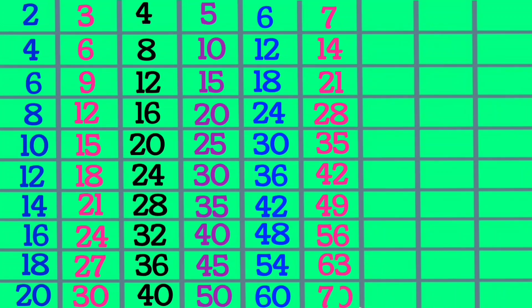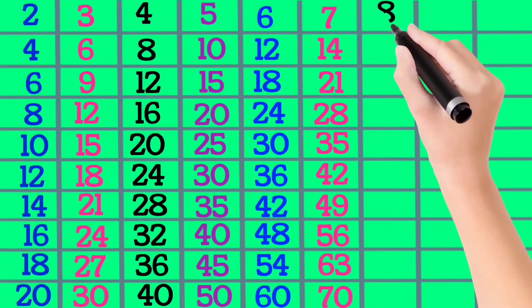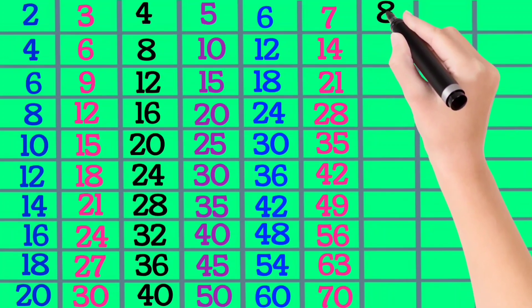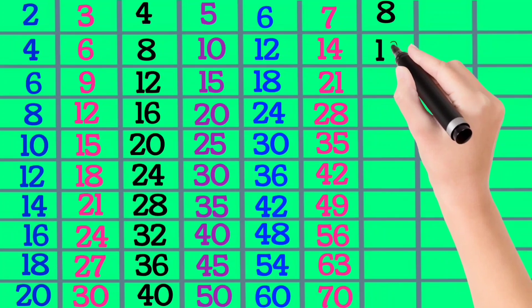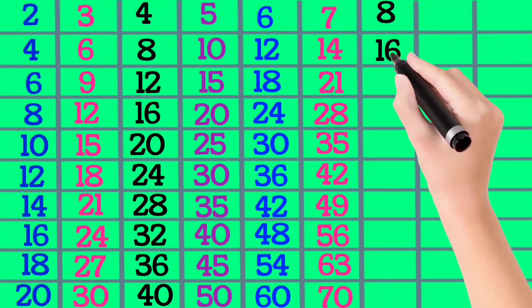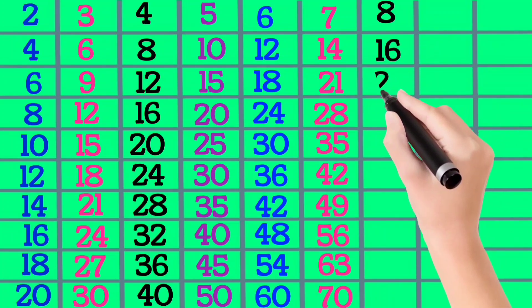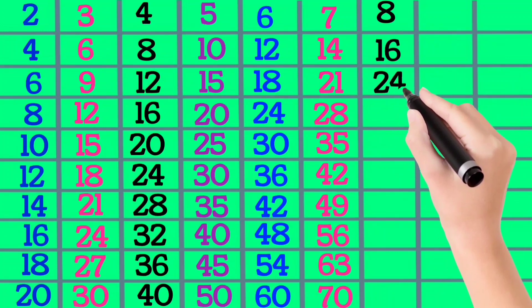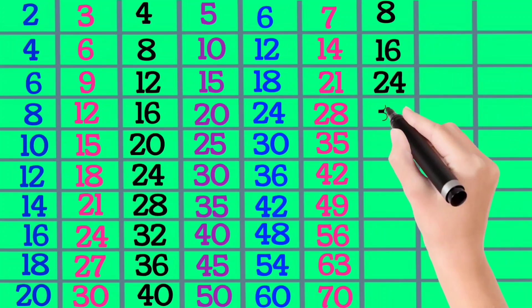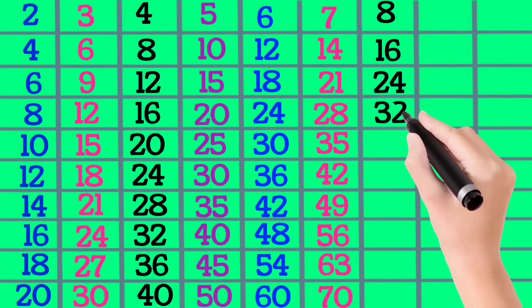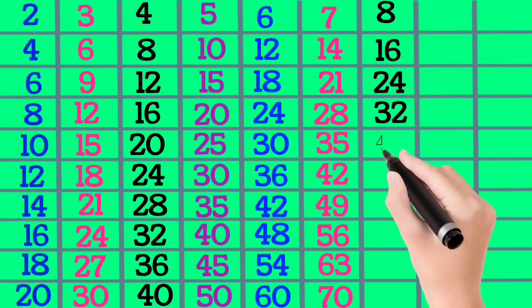8×1 is 8, 8×2 is 16, 8×3 is 24, 8×4 is 32, 8×5 is 40.